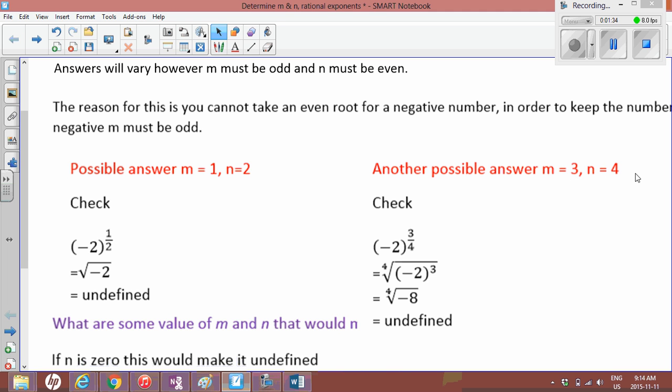So another possible answer, m equals 3 and n equals 4. Again, you'll notice the denominator of the exponent is even, the numerator is odd. So if you do (-2) to the exponent of 3, that's still negative because it's (-2) times (-2) times (-2). Negative times negative makes positive, but then again another negative makes negative, so negative 8. And you cannot take a fourth root of that, so that becomes undefined.